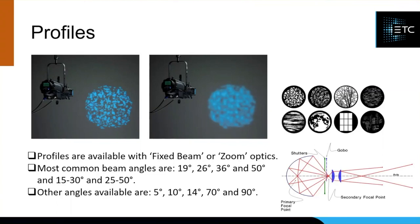They're called ellipsoidals because of the nature of their reflector — they have an ellipsoidal reflector inside which focuses all the light through a central point called the gate. That's where you'll find the shutters, your iris slot, and your gobo slot. From there it crosses over and out through the lenses and out through the front of the fixture. If you look at this picture, you can actually see the beams of light crossing over as they come out. That's why when you're putting your gobos in, you have to put them in upside down and back to front, because the light is actually changing optically as it passes through the optical system.